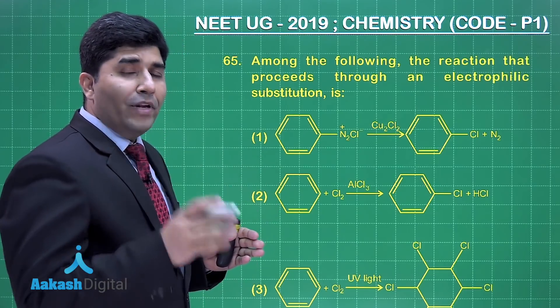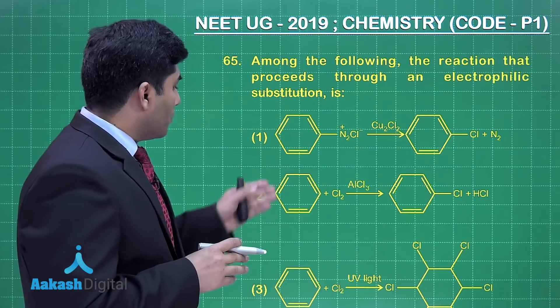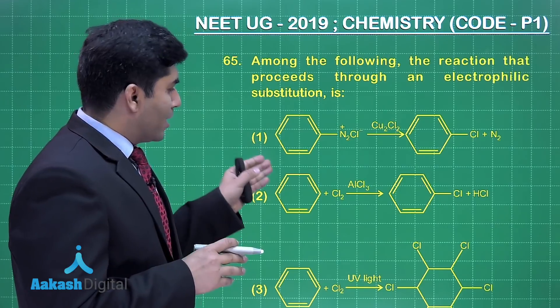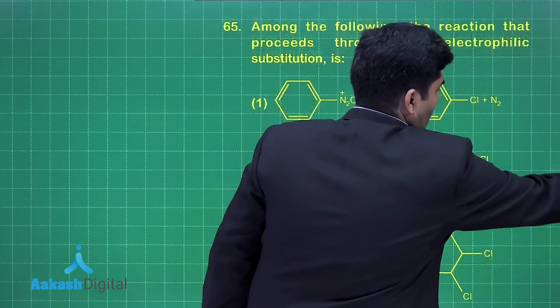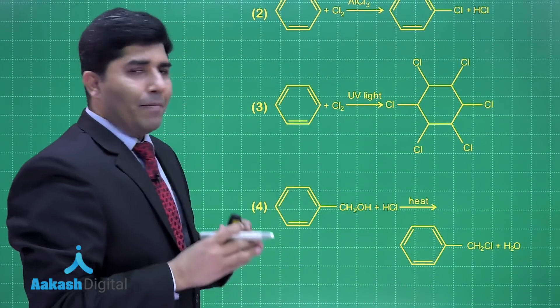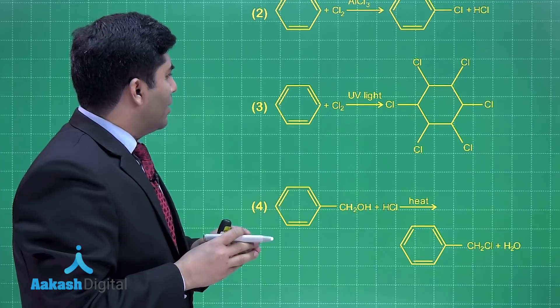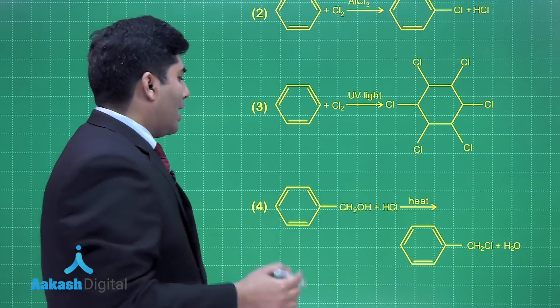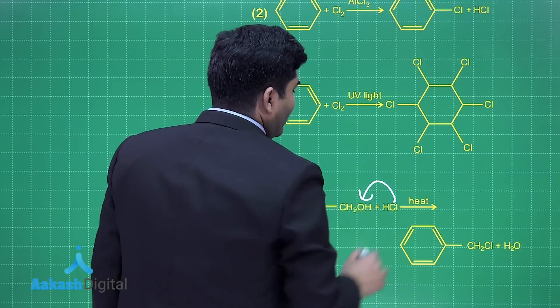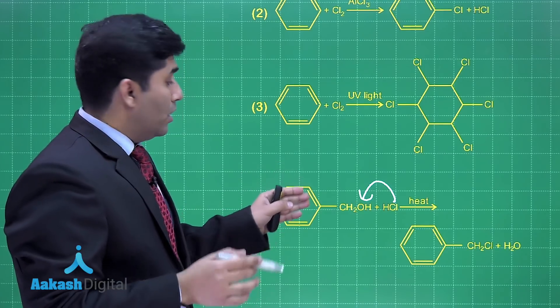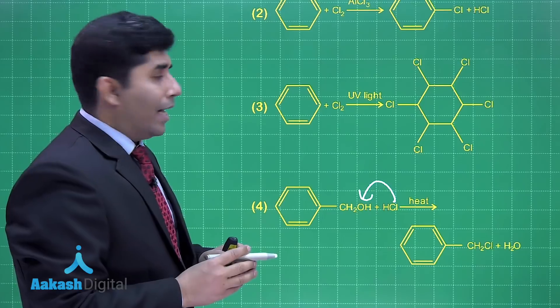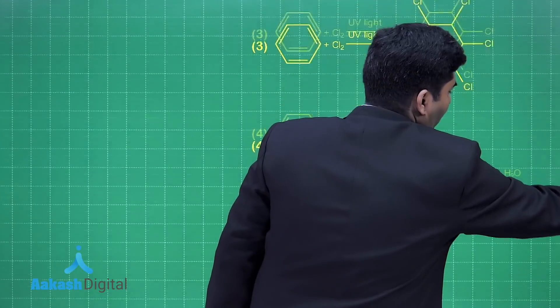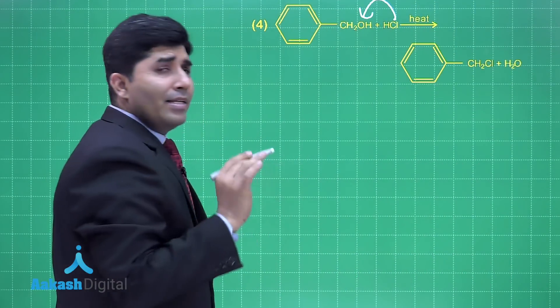The second one, yes this is electrophilic substitution reaction, we will discuss it. Third one is the preparation of gammaxene and since it is taking place in the presence of light it is free radical reaction. And in the fourth one is again nucleophilic substitution reaction. Cl- will replace the OH- because the carbocation formed will be benzyl carbocation, so our option will be option number two.